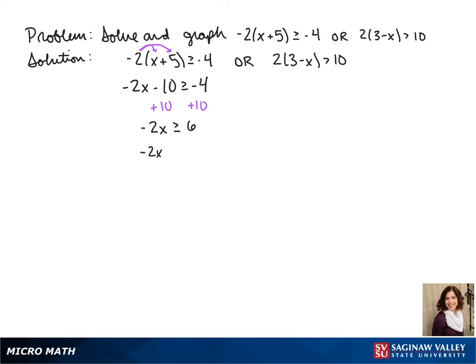So when we divide both sides by a negative we have to flip the sign. So negative 2x over negative 2 is less than or equal to 6 divided by negative 2. So for that part of our inequality we get x is less than or equal to negative 3.